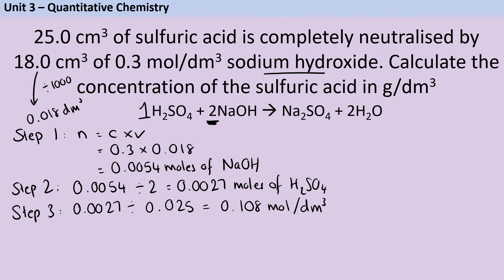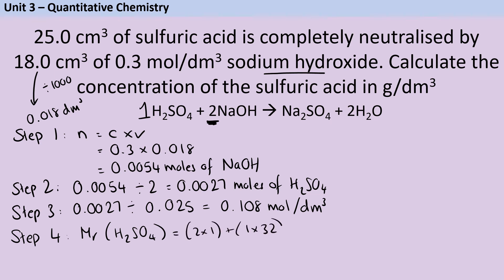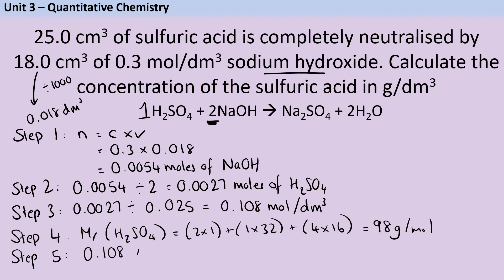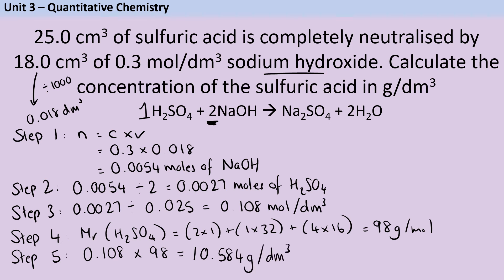The final two marks come from calculating the relative formula mass of sulfuric acid: (2×1) + (1×32) + (4×16) = 98 g/mol. Then multiply the molar concentration by the Mr: 0.108 × 98 = 10.584 g/dm³. That is the final answer.